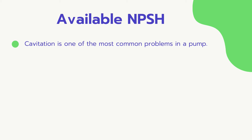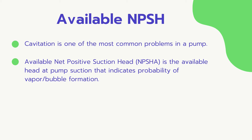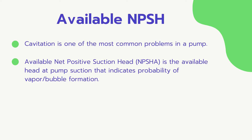So what is the available NPSH, or NPSHA? The available NPSH is the available head at pump suction that indicates the probability of vapor or bubble formation. This means that if the NPSHA is enough, then cavitation shouldn't occur and the pump can work efficiently. But if it is too low, this can cause cavitation, which can lead to severe pump damage if the pump works for some time.